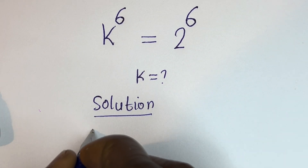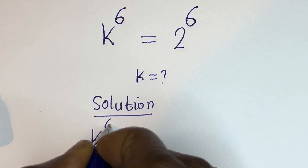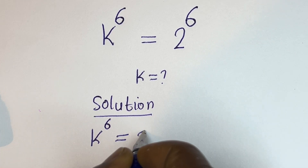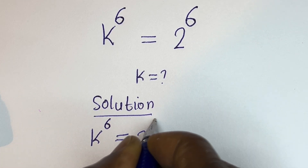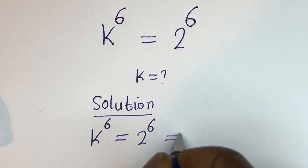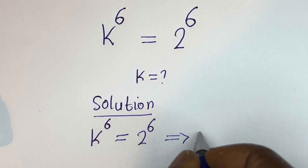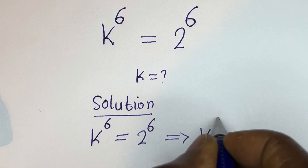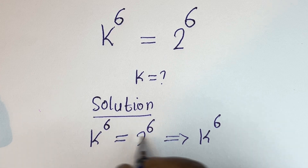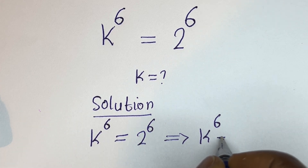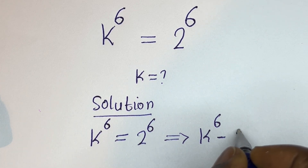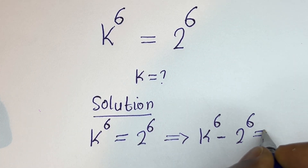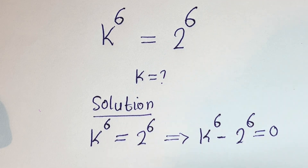We have k to the power of 6 is equal to 2 to the power of 6. Taking the right side across, it becomes k to the power of 6 minus 2 to the power of 6 is equal to 0.